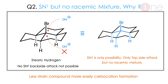Question 2: SN1 reaction is possible in this structure, but not racemization — why? We know that in SN1, both backside and frontside attack are normally possible. However, here the hydrogen atoms sterically hinder the backside. So backside attack is not possible, only frontside. Even though it is an SN1 reaction, only one face is accessible, so the product is not a racemic mixture. This question can only be answered if you understand the steric effect in the reaction.